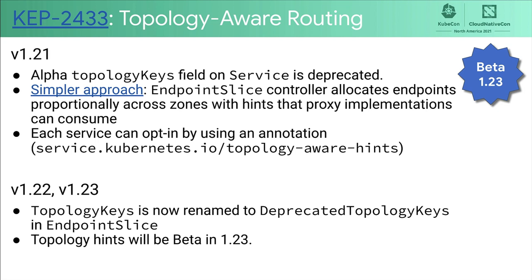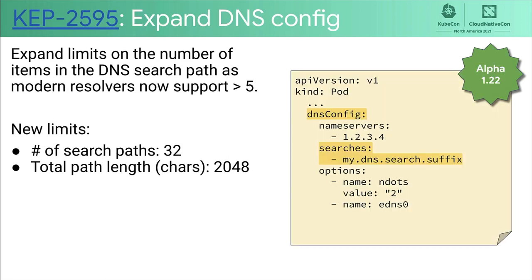The new topology hints is more flexible than the previous iteration and allows implementations to have more leeway in determining traffic routing when the user specifies topology-aware traffic. The topology keys field is now completely deprecated and renamed. DNS config now lets you specify more than five entries, matching the behavior of modern libc implementations. The new limits are 32 search path elements and the total path length cannot exceed 2048 characters. This is alpha, so please try it out and let us know if you have any problems.